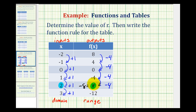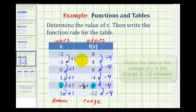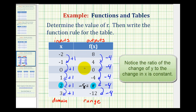Let's see if the pattern continues. Negative eight minus four does give us negative twelve, so we can conclude that r is equal to negative eight. Now we want to see if we can write a function rule that would create this entire table. We did just finish studying linear equations, and this table does represent a linear relationship.